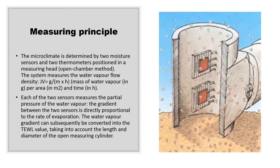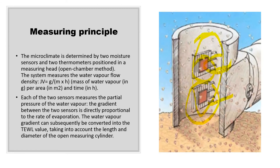The TEWL equipment has a probe which is placed on the skin body part. The microclimate is determined by two moisture sensors along with a thermometer positioned in a measuring head — this is the open chamber system. It measures water vapor flow density per unit area per unit time. Each of the two sensors measures the partial pressure of water vapor and the gradient between the two sensors, which is directly proportional to the rate of evaporation. The computed digital value is then displayed on the monitor, and at least three values are taken to calculate the mean.